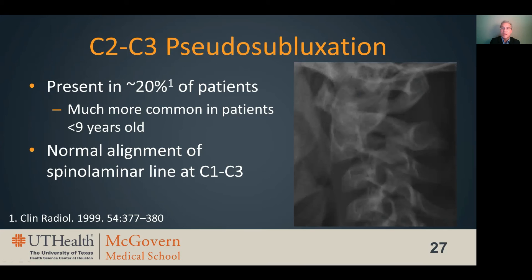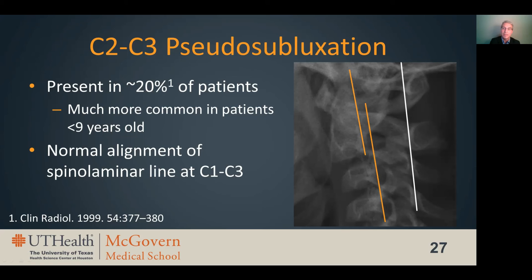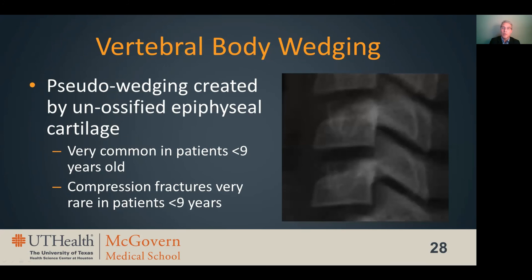C2-3 pseudosubluxation is a very common physiologic finding that can simulate cervical injury, particularly on radiographs. Children, particularly those less than nine years old, can present with anterolisthesis of the C2 vertebral body over C3, which can be confused with post-traumatic subluxation. Pseudosubluxation can be differentiated from true subluxation by recognizing that while there is offset of the C2-3 vertebral bodies, the spinal laminar line remains in normal alignment at the C1 through C3 levels. Physiologic wedging is another very common phenomenon in the subaxial spine particularly in patients under the age of nine, and vertebral body compression fractures are extremely rare in patients younger than nine.